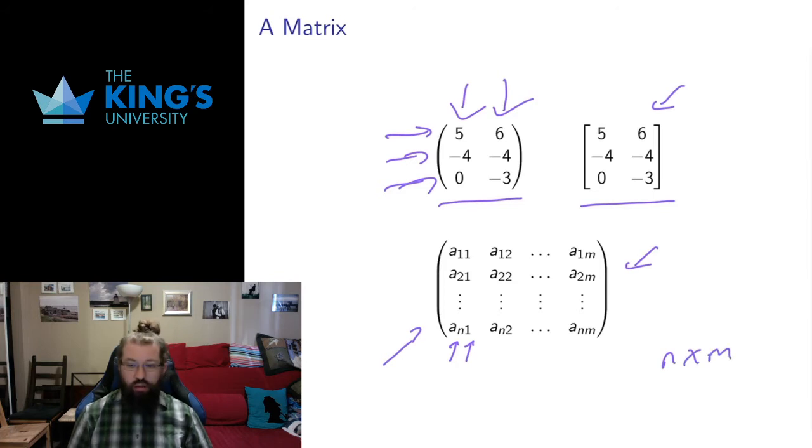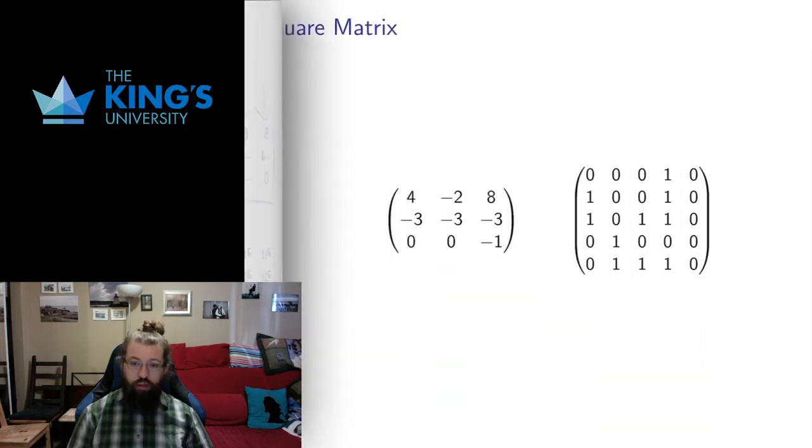So if I say an n times m matrix, I mean a matrix with n rows—rows come first—and then m columns. So a four by seven matrix would have four rows and seven columns. That's how we determine the size of this rectangular array.